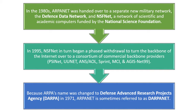Commercial backbone providers included networks such as SINET, ANS, AOL, Sprint, MCI, and others. Because ARPA's name was changed to Defense Advanced Research Projects Agency (DARPA) in 1971, ARPANET is sometimes referred to as DARPANET.